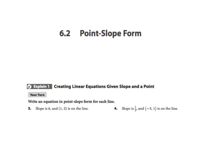Today is our 6.2 lesson on point-slope form. We're still going to be talking about linear equations. We've talked about two different ways to write those so far: y equals mx plus b — m is our slope and b is our y-intercept — and then we also have standard form, which is ax plus by equals c.